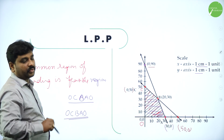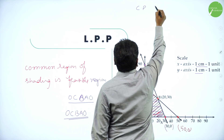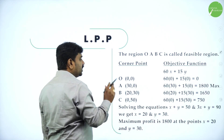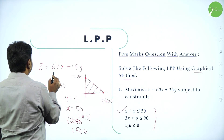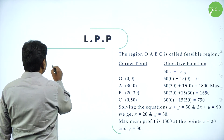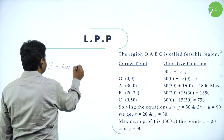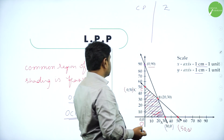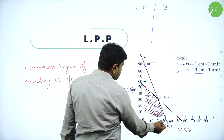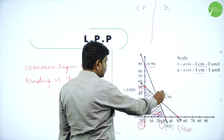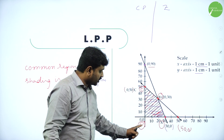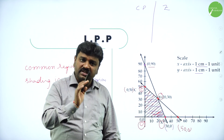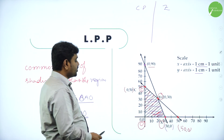The vertices of the feasible region are called corner points. We make a table of corner points O, A, B, C and the objective function Z. In order to plot the graph, take x-axis: 1 cm = 1 unit, y-axis: 1 cm = 1 unit. The common region of shading is the feasible region, with corner points being the vertices.